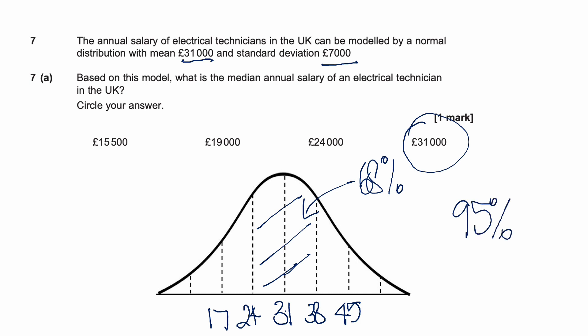That's within two standard deviations. Adding a third standard deviation either side gives 52,000 and 10,000, and between 10,000 and 52,000 we have 99.7% of our data. That's just a quick reminder, and we'll use this picture in the next part of the question.